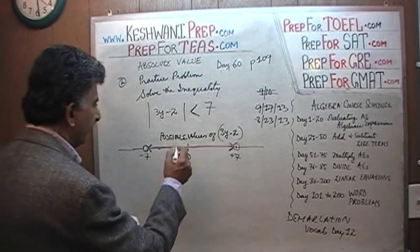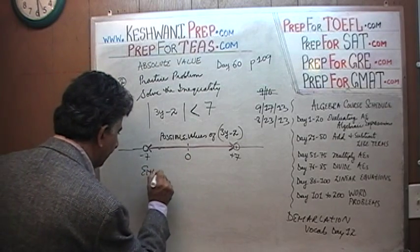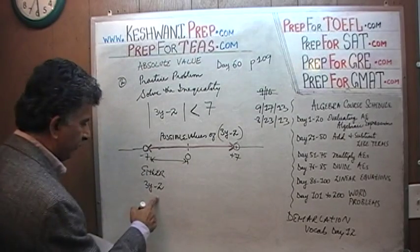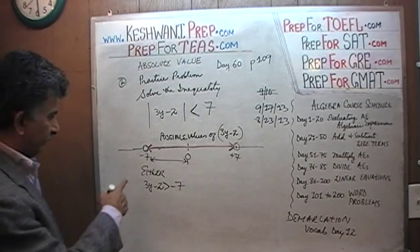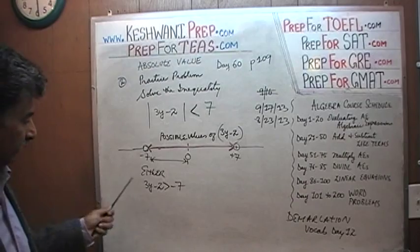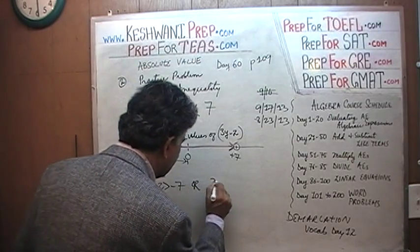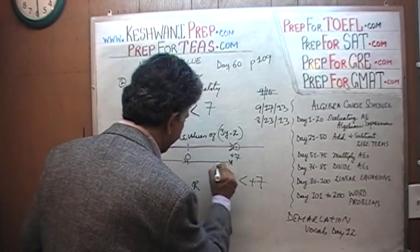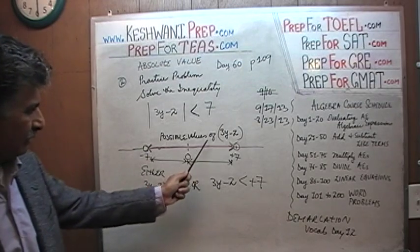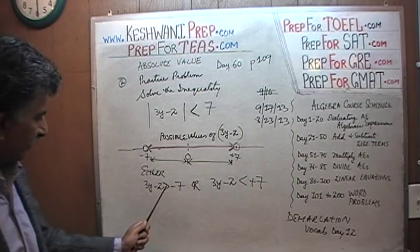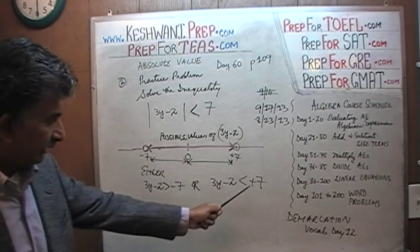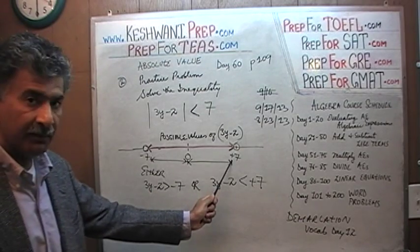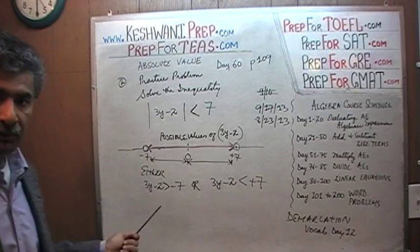What we are saying is there are two possible conditions: either 3y − 2 must fall in the region from here to here, meaning 3y − 2 has to be greater than negative 7, or 3y − 2 has to be less than positive 7. The red line shows the possible values of 3y − 2: it has to be more than negative 7 and less than positive 7. That's all we have to do — solve for y.